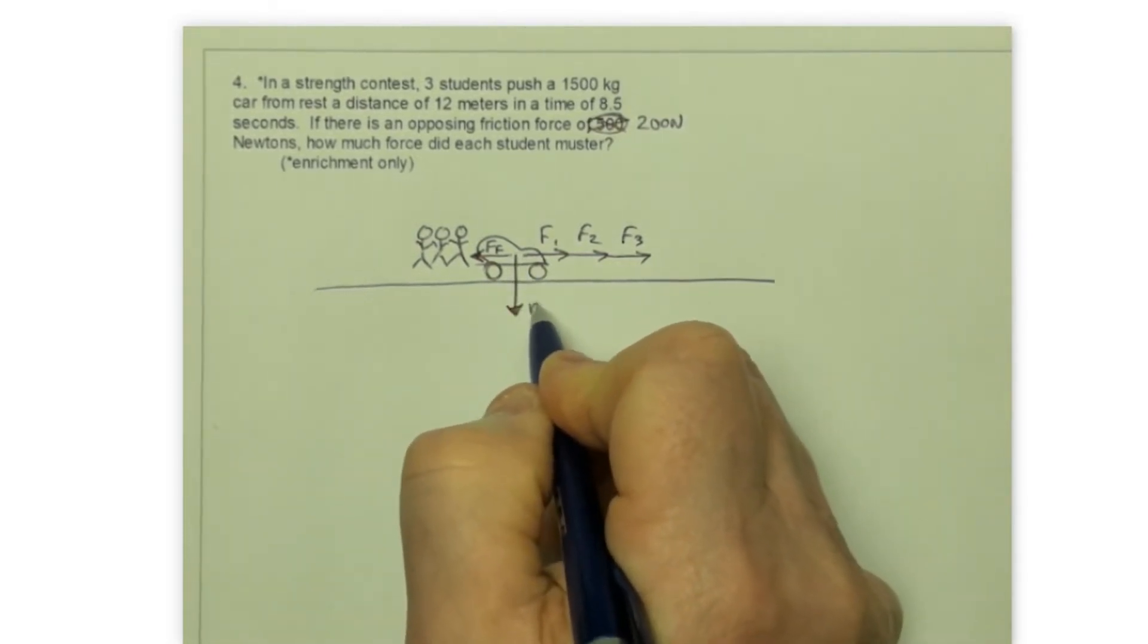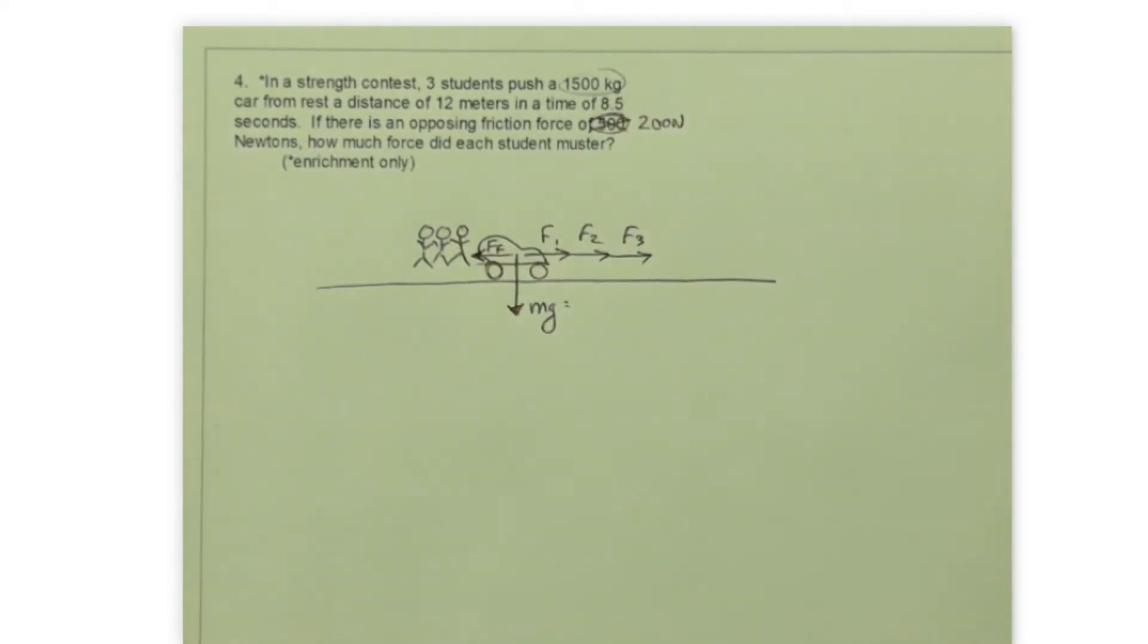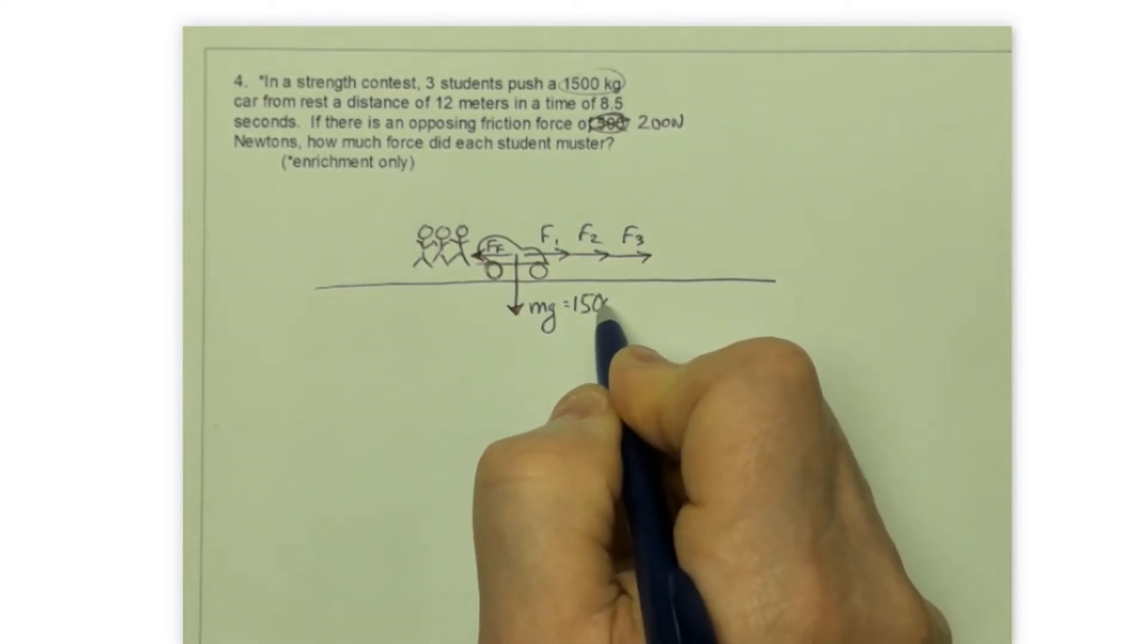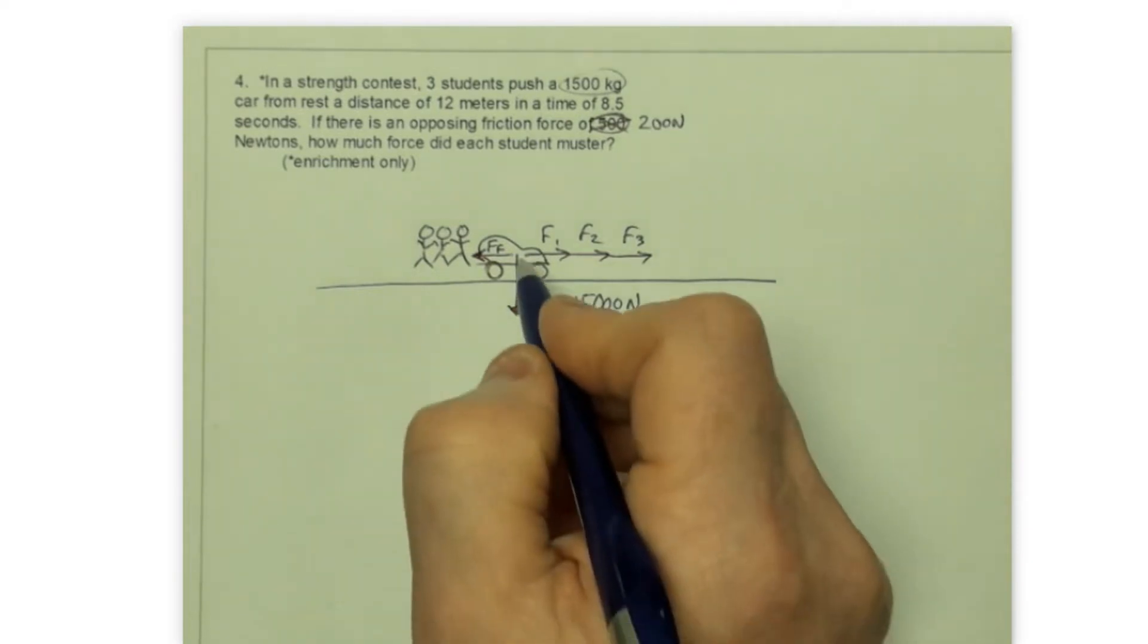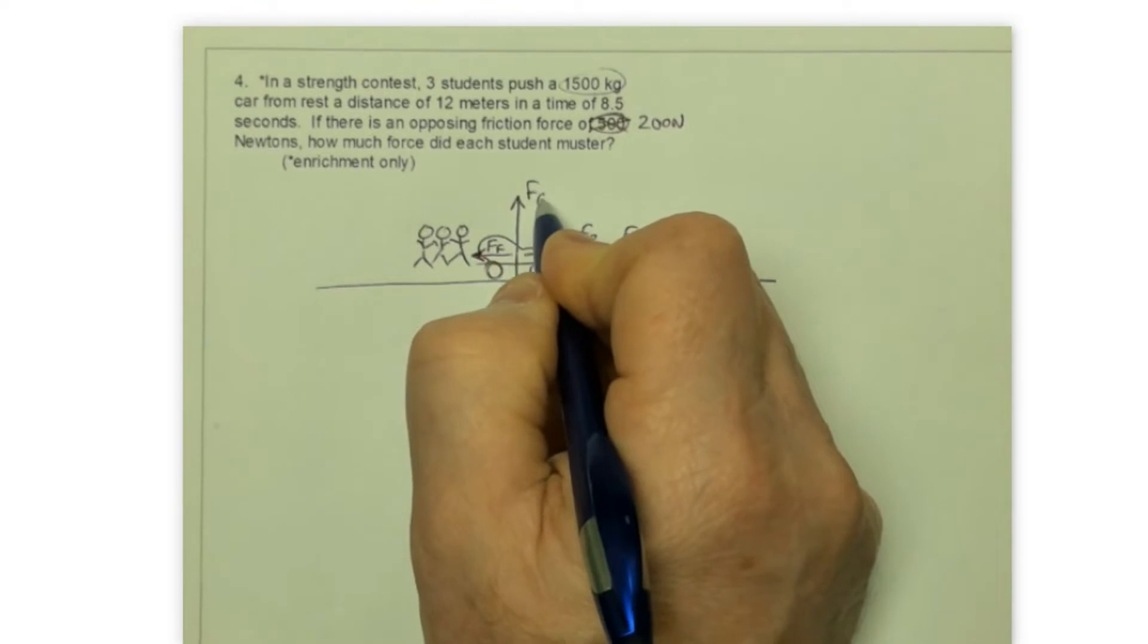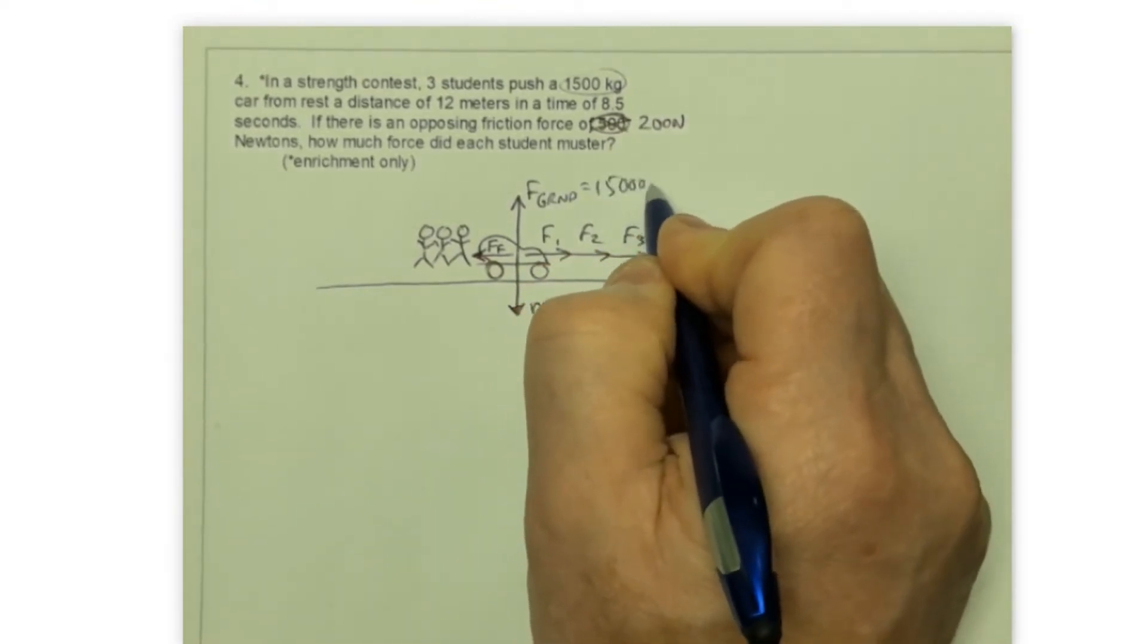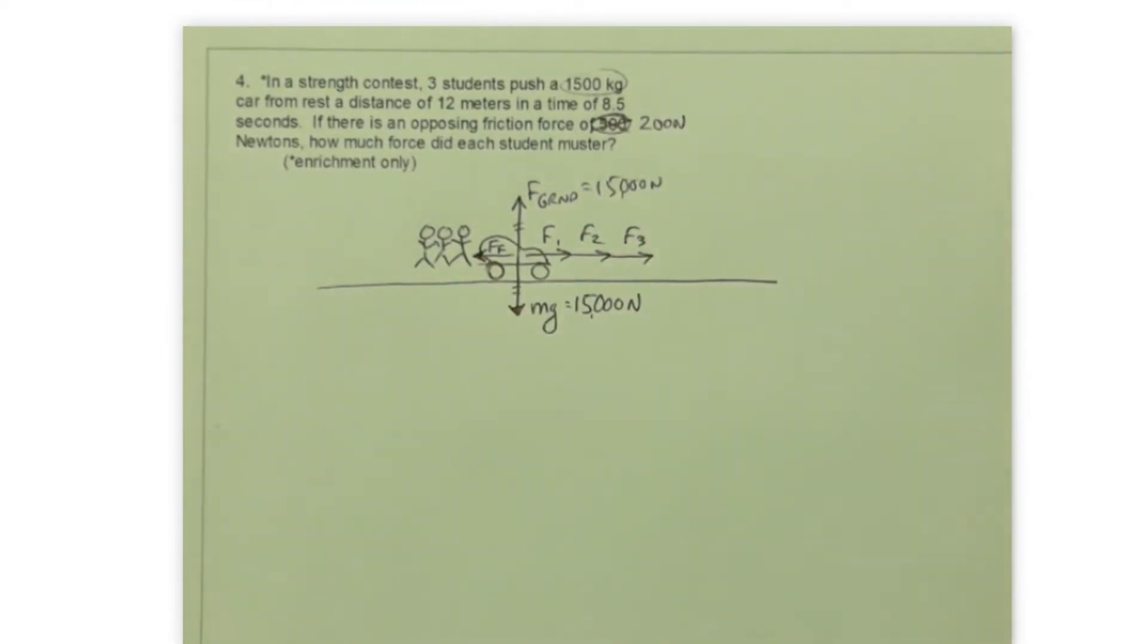Now certainly we know that the car has some weight. And so that weight would be calculated as mg. And I took 1500 kilograms multiplied by 10, and I would get about 15,000 newtons of weight. And of course we know that the ground is also pushing up on that car with a force from the ground. And that force should also be 15,000 newtons. And that's because those two forces are balanced. They produce equilibrium vertically.